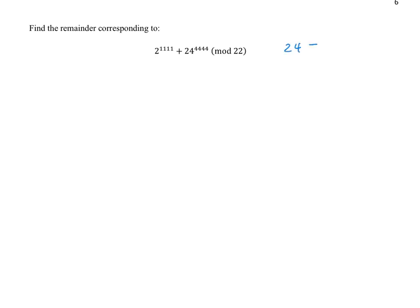The next problem has 2 to a really big power and 24 to a really big power. We start by reducing the base: 24 in mod 22 gives 2. So both terms have a base of 2, or a base that reduces to 2. We can rewrite the problem as 2 to the power 1111 plus 2 to the power 4444. We want to figure out how to reduce these big powers of 2, so we're going to look for a pattern with powers of 2.